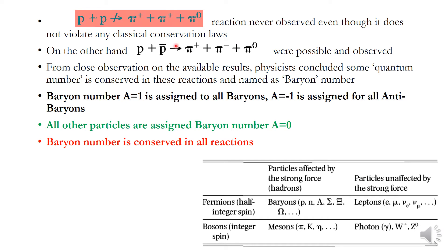Today we will discuss baryon number conservation and lepton number conservation. Consider this reaction: proton plus proton produces π⁺ + π⁺ + π⁰. This reaction was never observed, even though it does not violate any classical conservation laws. The charge is two positive on both sides, so charge is conserved. Momentum, energy, and all classical conservation laws can be conserved — but this reaction was never observed.